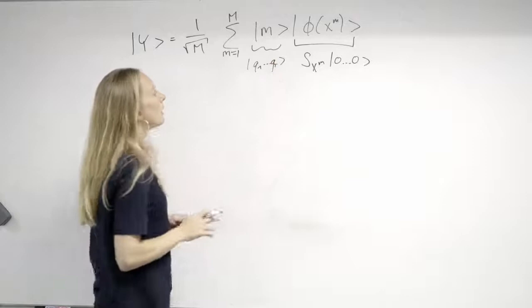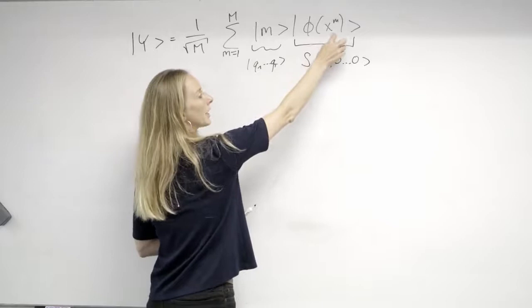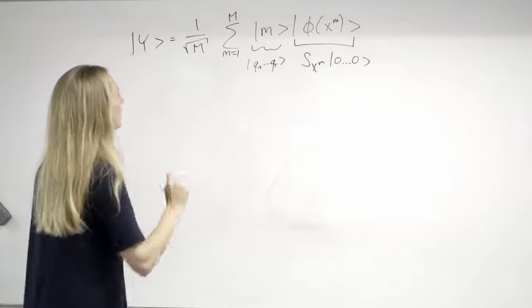And what it basically does is this index register marks that we actually loaded the mth input state here into the quantum feature state. What happens here—so once we have done this loading routine, which is not very trivial, so you have to decompose it into gates and you see that it gets a little bit complicated to do this always conditioned on your index state—